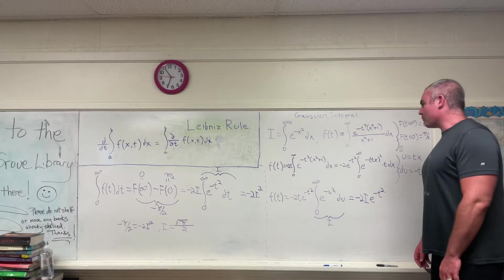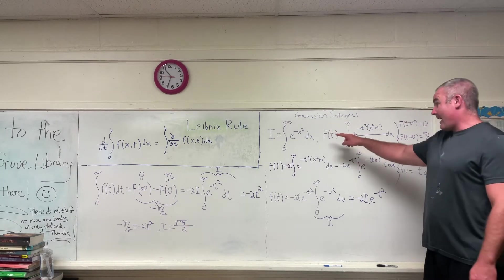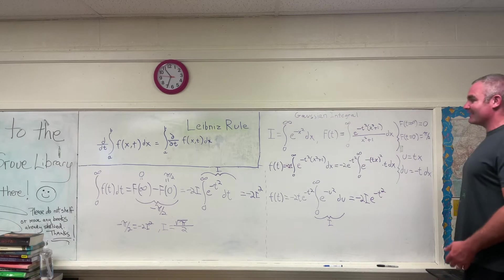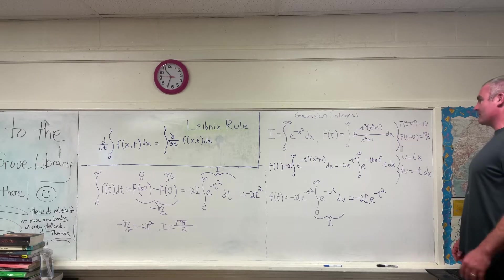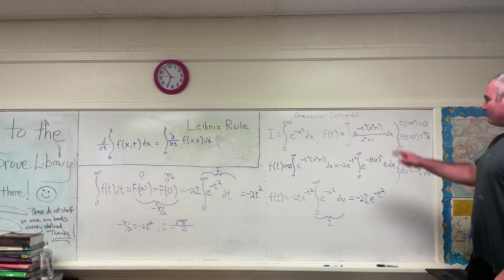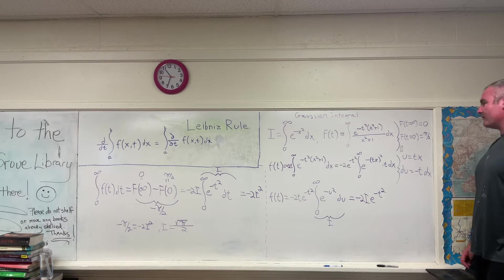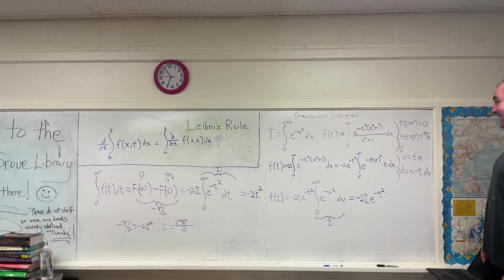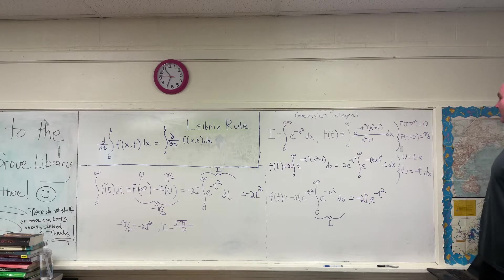So what we're going to do is start off with a function of T — big F of T — to represent the fact that this function of T is the antiderivative of some original function. Our big F of T is going to be equal to the integral from zero to infinity of e to the negative T squared times x squared plus one, all over x squared plus one, DX.